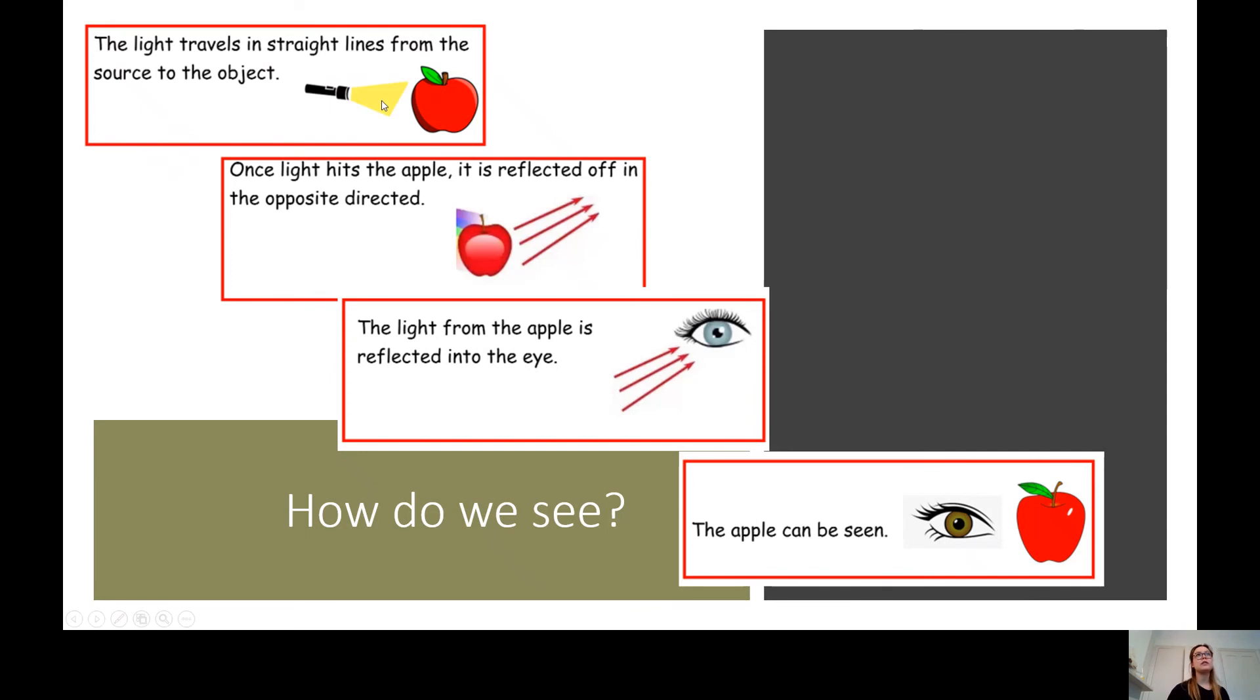So once light hits the apple, it is reflected off in the opposite direction. So it lands on the apple and then the light bounces off in a straight line. And the light from the apple is reflected into the eye. And that is how we see.